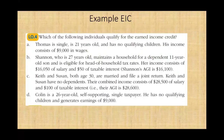Let's look at an example. There are a lot of small rules about the EIC; I'm just going to give an overall idea. Thomas is single, 21 years old, and has no qualifying children. His income consists of $9,000 in wages. For no qualifying children, you have to be between the age of 25 and 64 — Thomas is 21, so he does not qualify.